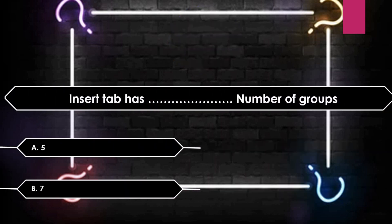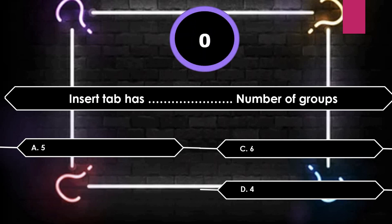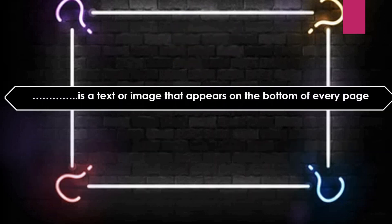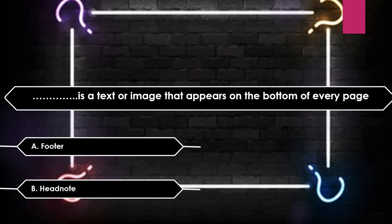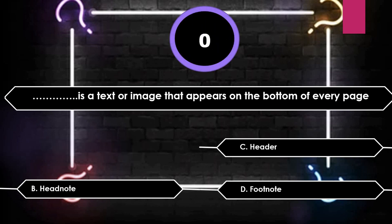Insert tab has how many groups? Options: 5, 7, 6, 4. A text or image that appears at the bottom of every page — options include Footer, Headnote, Header, or Footnote. The answer is Footnote.